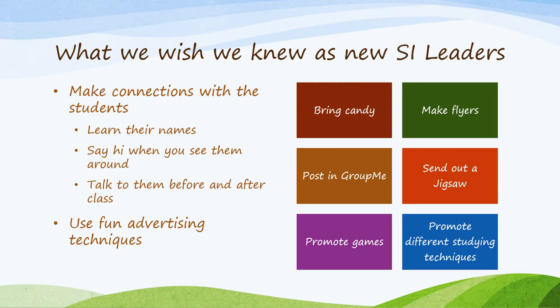Let's go over making connections. You're trying to make connections with your students — learning their names, greeting them in the hallways or in class, or getting to class 10 minutes beforehand so you're the first face they see. Some different advertising techniques: maybe you do a PowerPoint, a flyer, or hang something up in class. Another way is similar to bribing them — bringing candy, pizza, or a snack to your SI sessions to entice more students. You can also go over what you do inside your SI sessions: jigsaws, clusters, Kahoot — different study techniques.